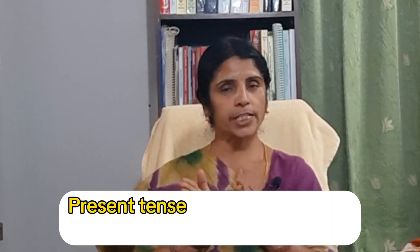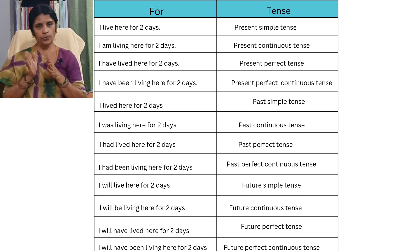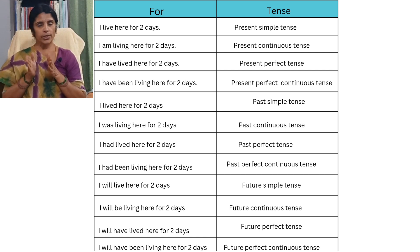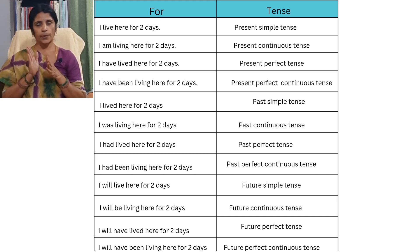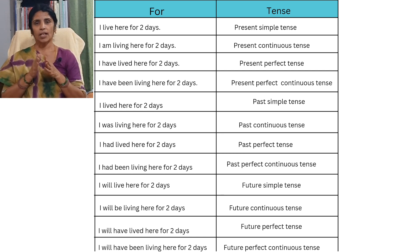The preposition 'for' can be used with any tense. Take a look at these examples: 'I live here for two days' — present simple tense. 'I am living here for two days' — present continuous tense. 'I have lived here for two days' — present perfect tense. 'I have been living here for two days' — present perfect continuous tense.